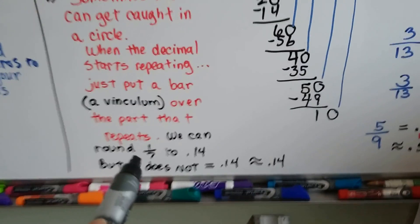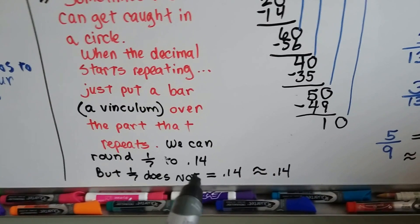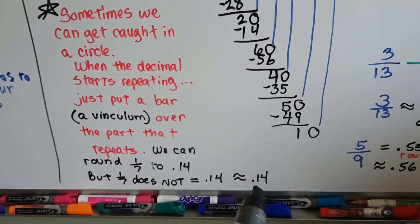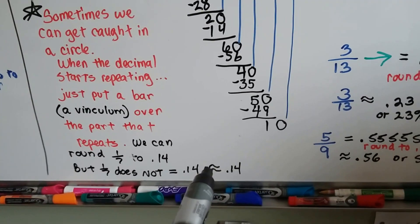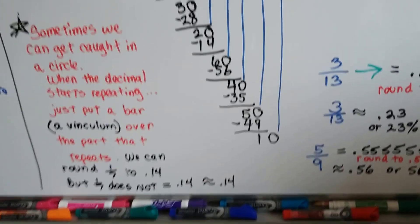So, we could round one-seventh to fourteen-hundredths, but one-seventh does not equal fourteen-hundredths. It's approximately fourteen-hundredths. This sign means approximately, the two little wavy, it looks like a wavy equal sign.